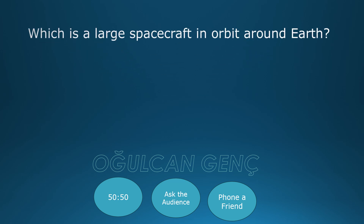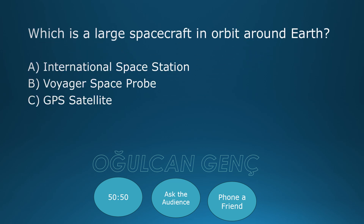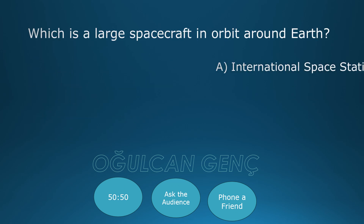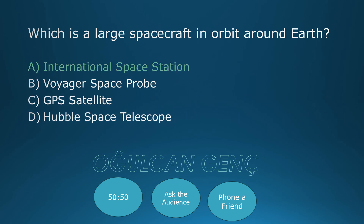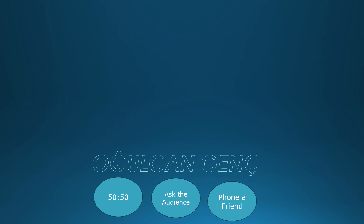Which is a large spacecraft in orbit around Earth? Options: International Space Station, Voyager Space Probe, GPS Satellite, Hubble Space Telescope. The correct answer is International Space Station.